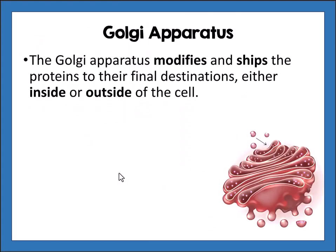In the Golgi apparatus, proteins are modified and shipped. Pieces can be added or eliminated, so the chemical structure of the protein is actually changed. Then the Golgi ships the proteins to their final destination — either inside or outside of the cell — depending on the function of that particular protein and where it belongs.